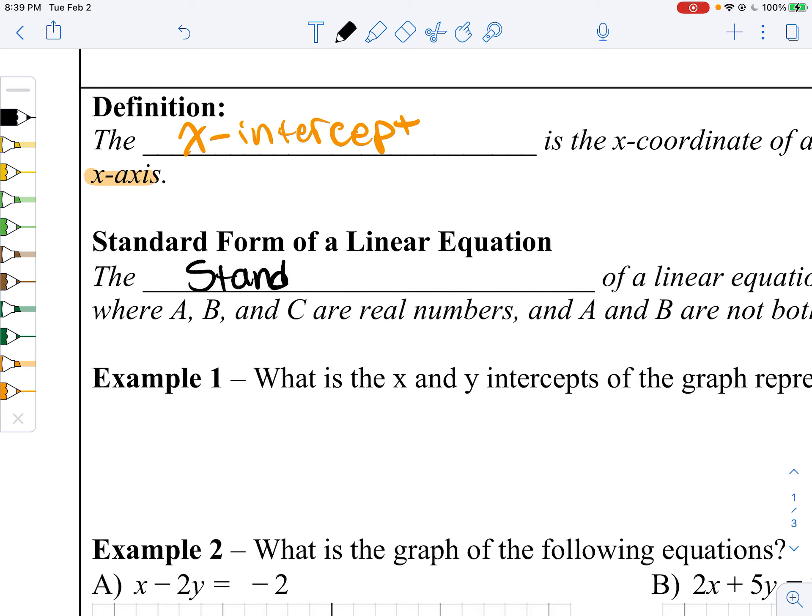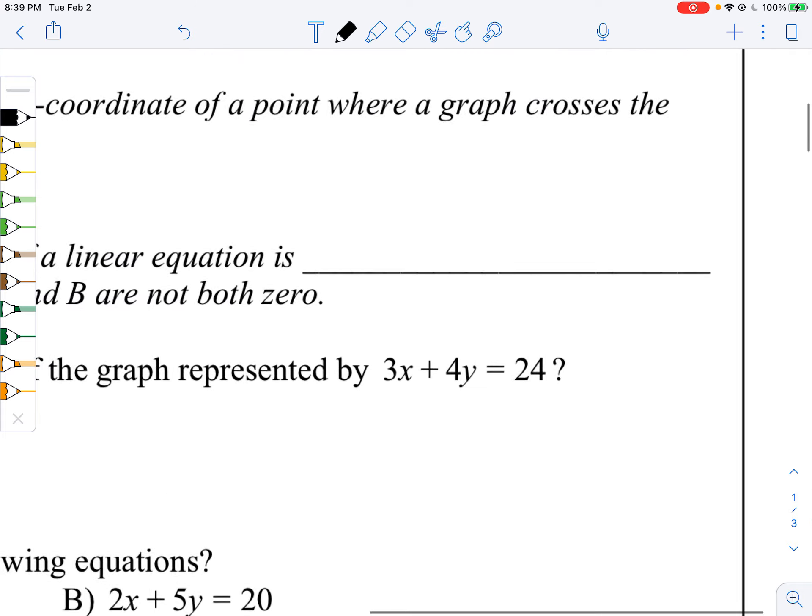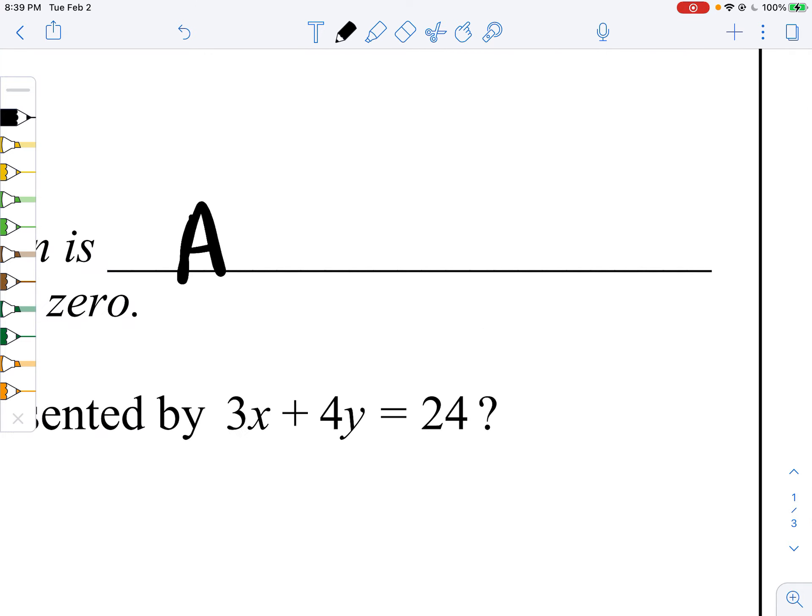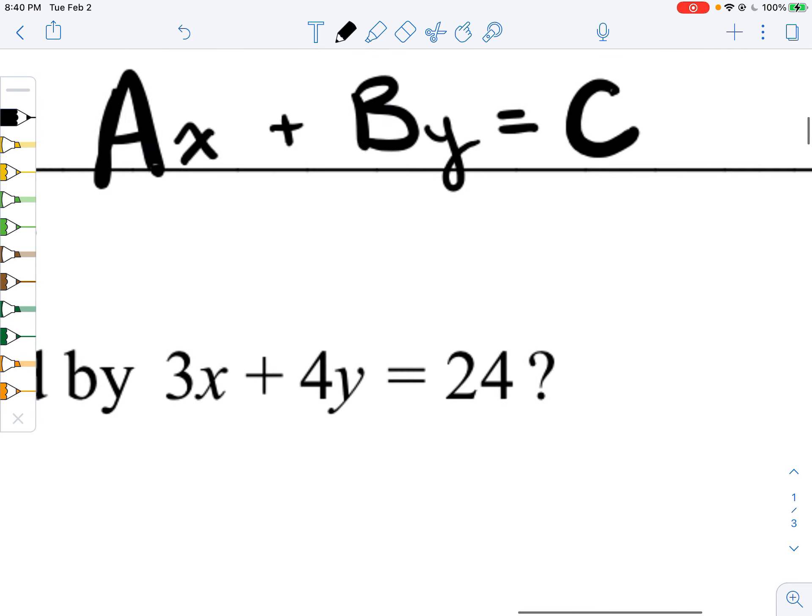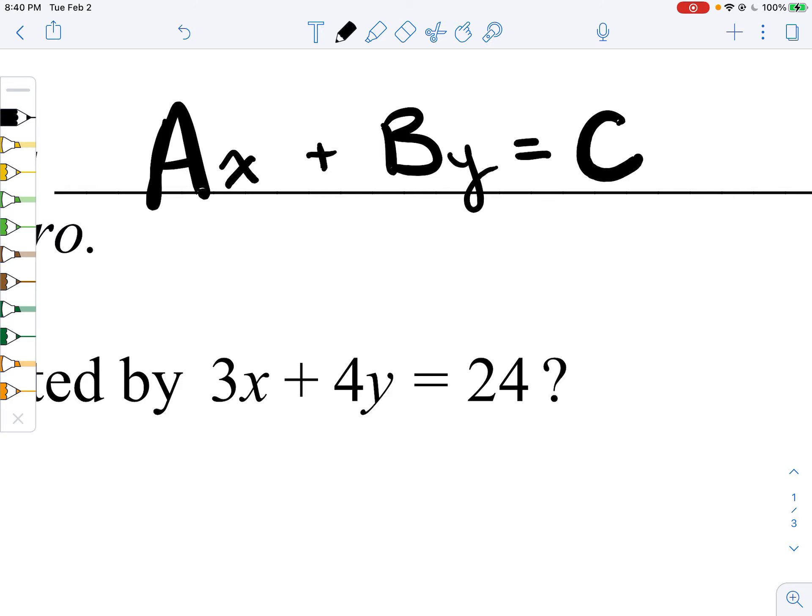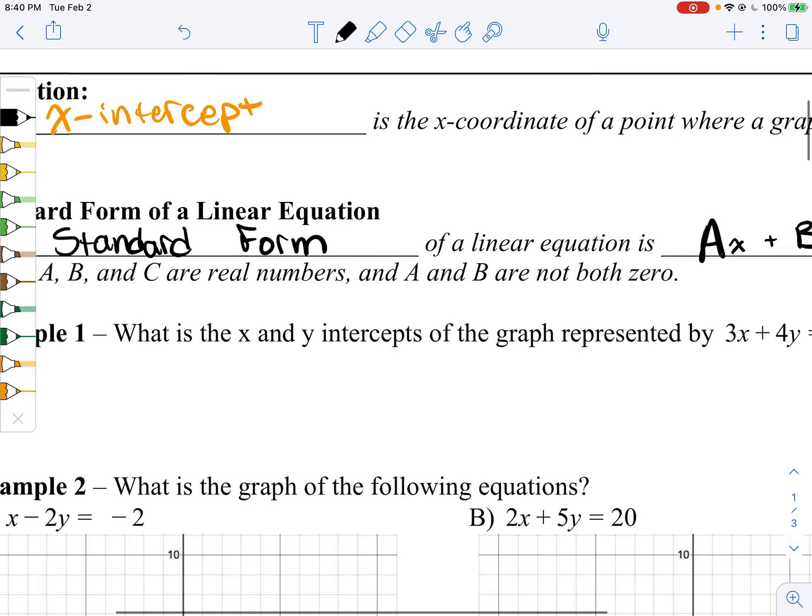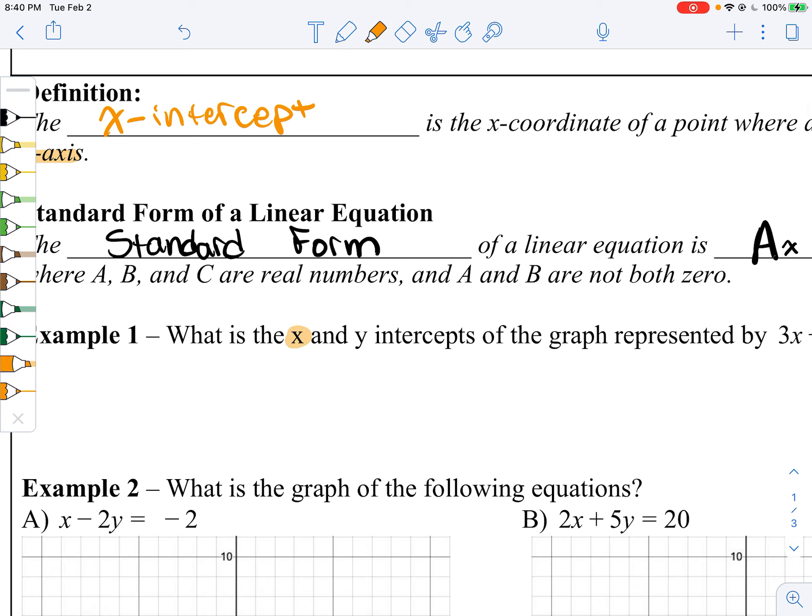Standard form is called standard form because it uses integers. It's nice to look at. Standard form looks like where you have some integer times x, plus some integer times y, equals some other integer. This is really what it looks like, this guy right here. And what we're going to do is figure out, hey, what is the x-intercept and what is the y-intercept?